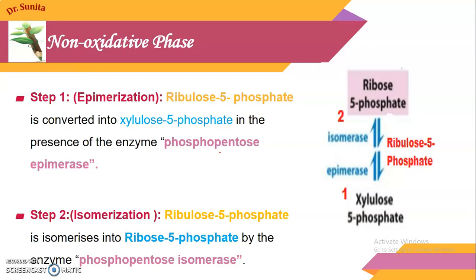We will now discuss the non-oxidative phase step by step. In the first step — epimerization — the ribulose-5-phosphate formed during the oxidative phase is converted into xylulose-5-phosphate during the epimerization reaction.